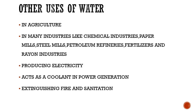Other uses of water: a large amount of water is used in agriculture. A large amount of water is required in many industries such as chemical industries, paper mills, steel mills, petroleum refineries, fertilizer and rayon industries. Water is also used for producing electricity, that is hydroelectricity, in which the force of falling water, that is hydro power, is used to produce electricity.